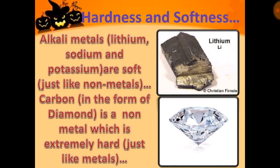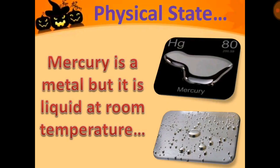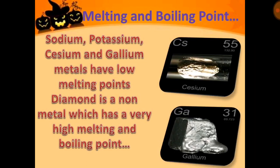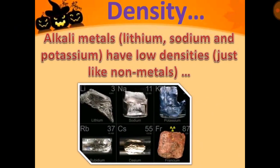Hardness and softness exceptions: alkali metals such as lithium, sodium, and potassium are soft just like non-metals. Carbon in the form of diamond is a non-metal but is extremely hard like metals. Mercury is a metal but it is liquid at room temperature. Sodium, potassium, cesium, and gallium are metals with low melting points. Diamond is a non-metal with a very high melting and boiling point due to its compact atomic structure. Alkali metals have low densities just like non-metals.